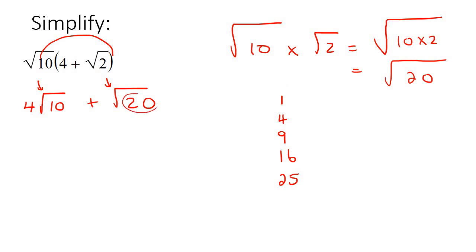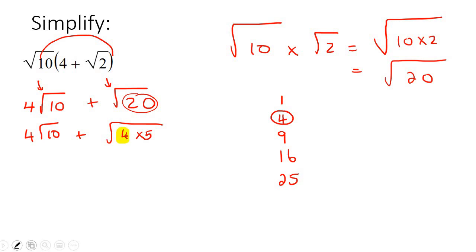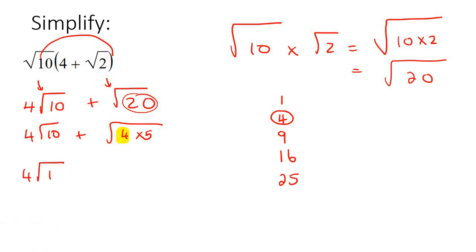What about the square root of 20? That's a nice one because that can be rewritten as 4 multiplied by 5. So we'll do that in the next step: 4 multiplied by 5. We know that the square root of 4 is 2, so we can rewrite this as 2 square root 5. And that is the most simplified we would ever be able to get this.